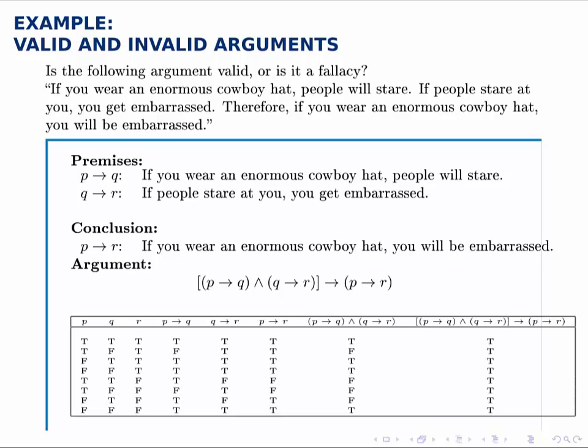This argument's a bit longer, but we can still break it down in the same sort of way. Notice that we have three components now. One is you wear an enormous cowboy hat, that's P. People stare, that's Q. And then you get embarrassed, that's R.